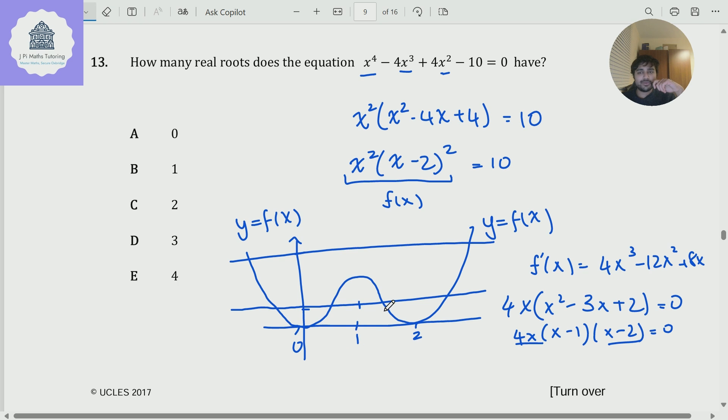What is the f of x value when x is 1? Well, I get 1 squared times 1 minus 2 squared, which is 1. So 10 is way, way up here somewhere if my y-axis is here. And so in particular, there's only going to be two solutions, kind of when this guy crosses here, and when this guy crosses somewhere about there. So the answer here is c, 2.